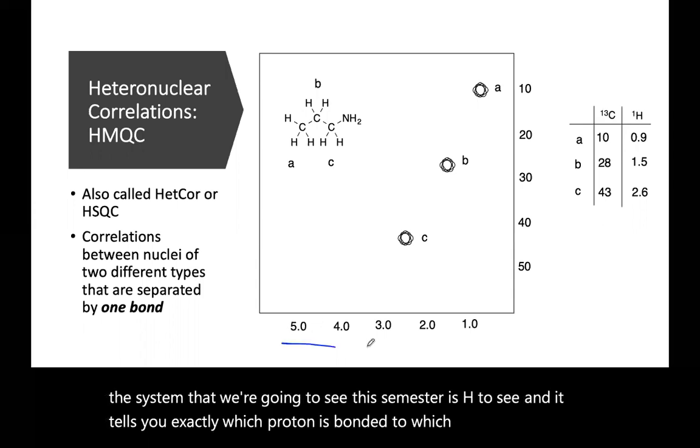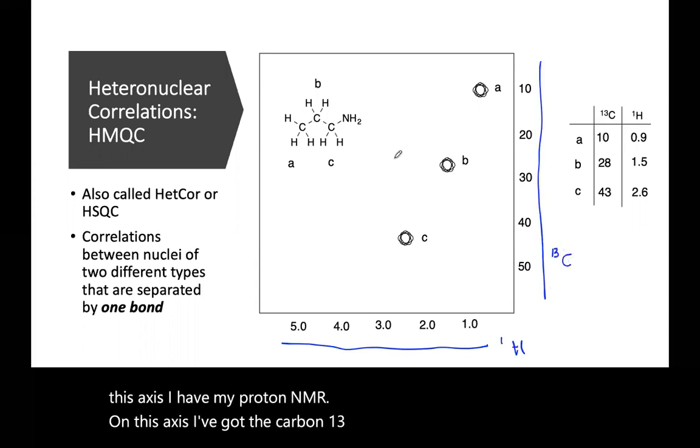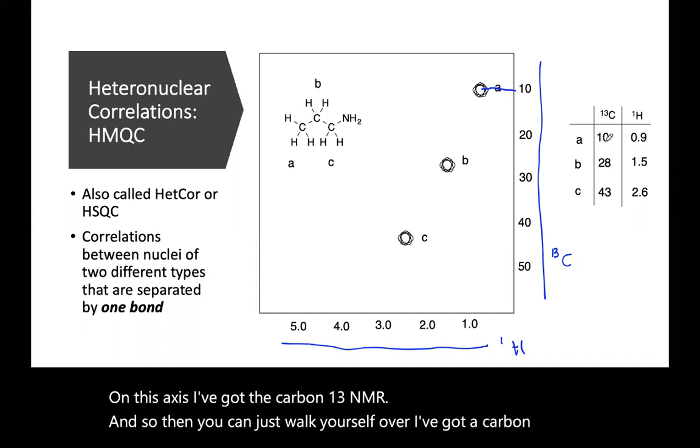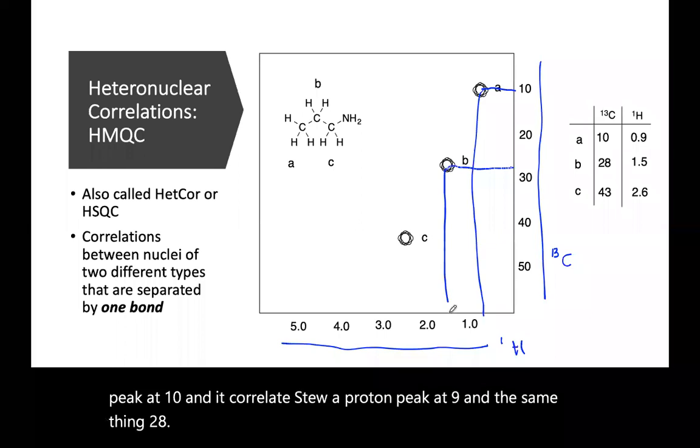On this axis I have my proton NMR. On this axis I've got the carbon-13 NMR. You can just walk yourself over - I've got a carbon-13 peak at 10, and it correlates to a proton peak at 0.9. And the same thing, 28 to 1.5.